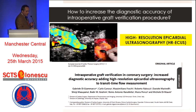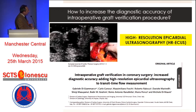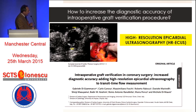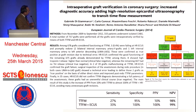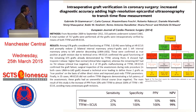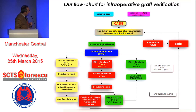Starting from 2009, we began using imaging combined within the same equipment together with transit time flow measurement, in order to increase the diagnosis of failing anastomoses. We published a paper in which we retrospectively analyzed 700 grafts, as shown in the flow chart on the right. Using these combined methods — functional and imaging — we achieved a nearly complete diagnostic accuracy, as shown in the table below the slide. This is our proposed flow chart for intraoperative graft verification.